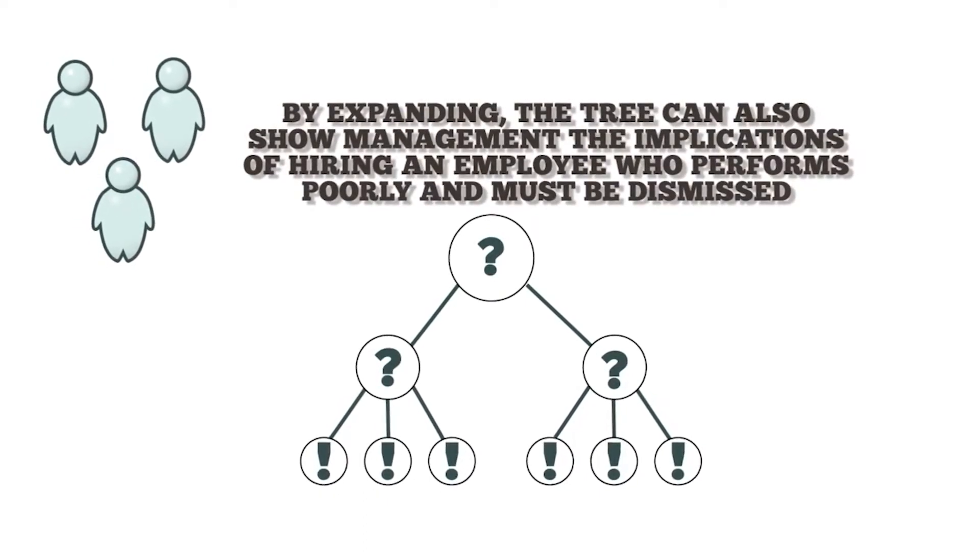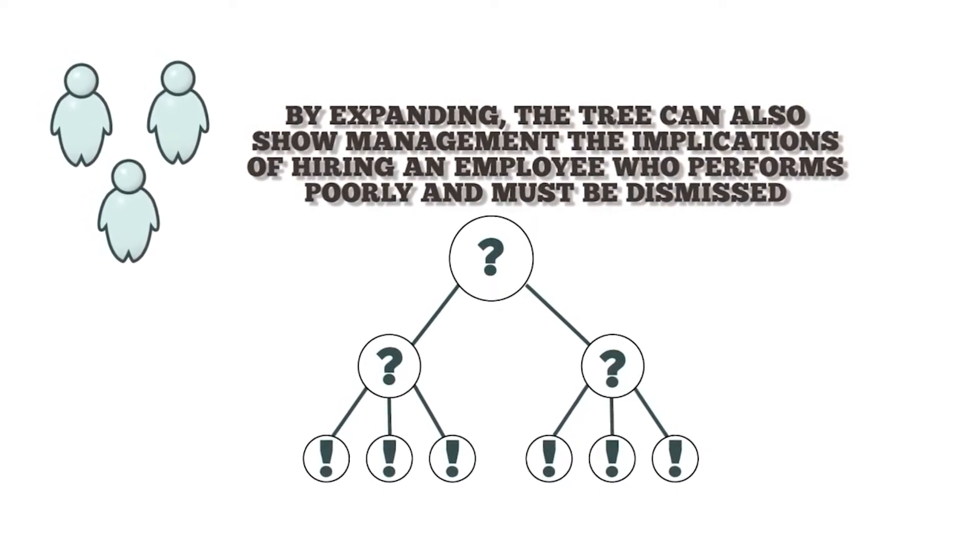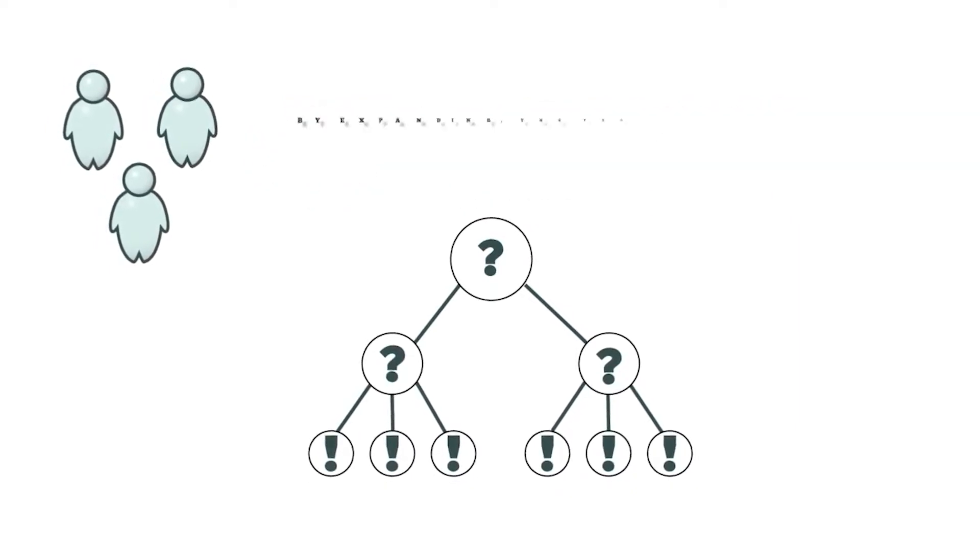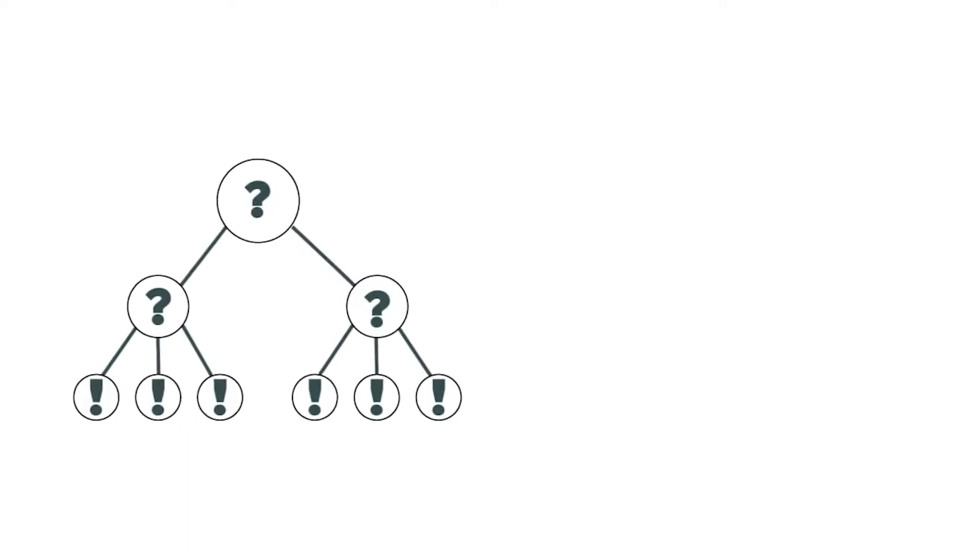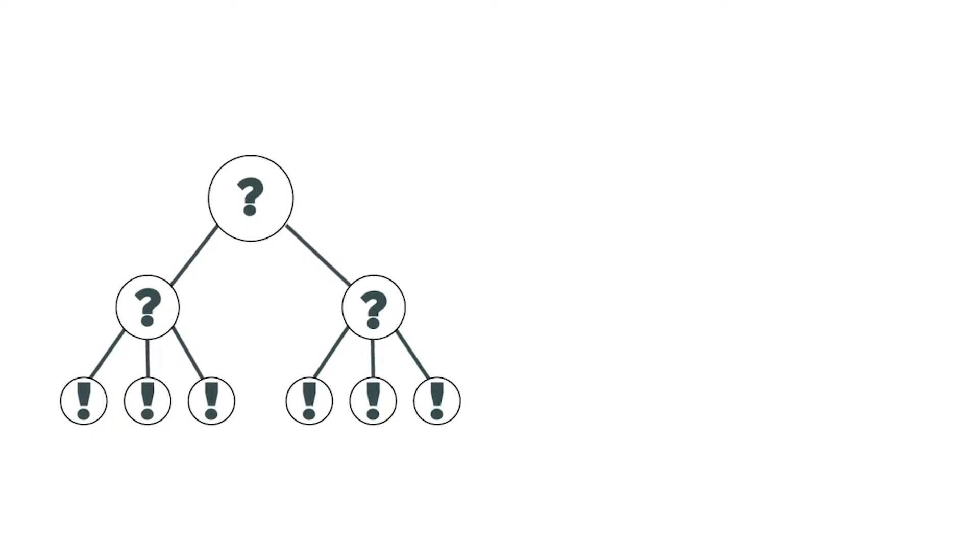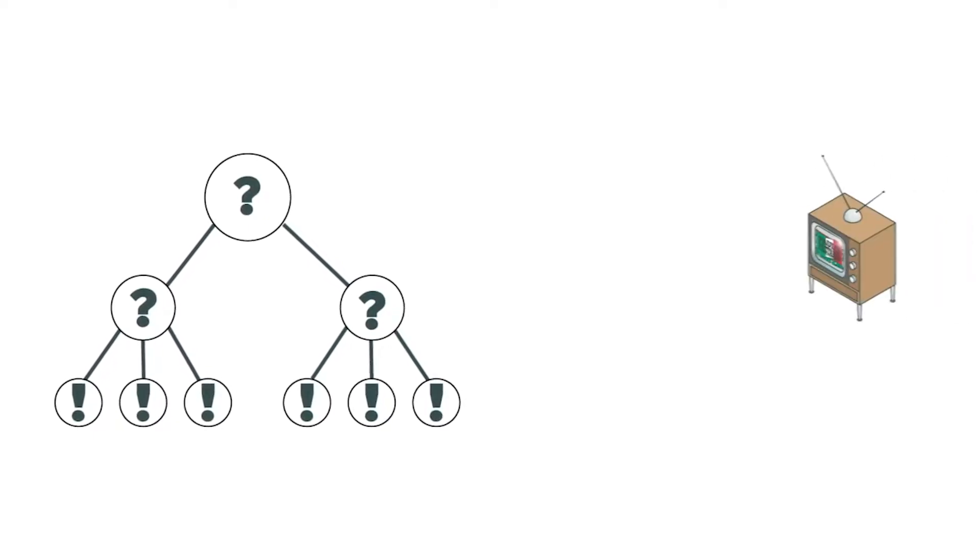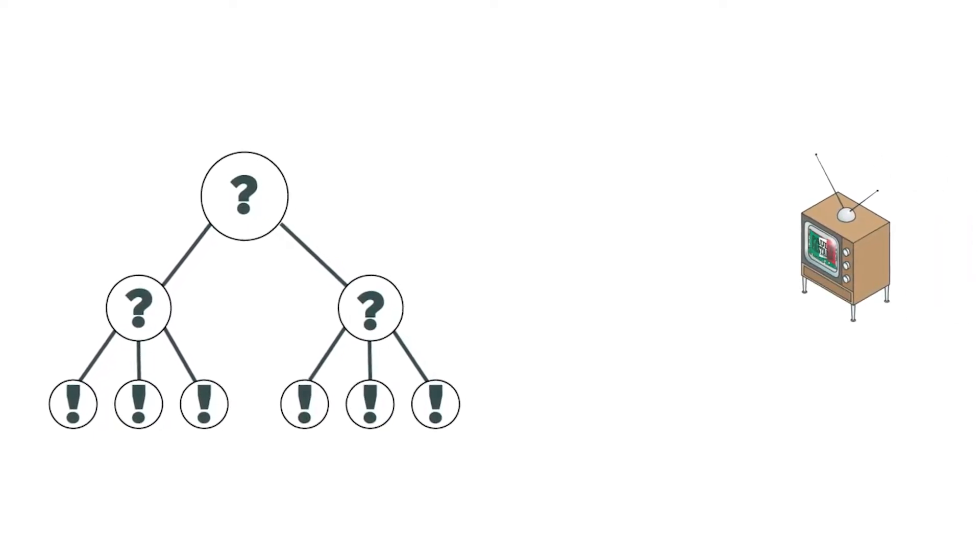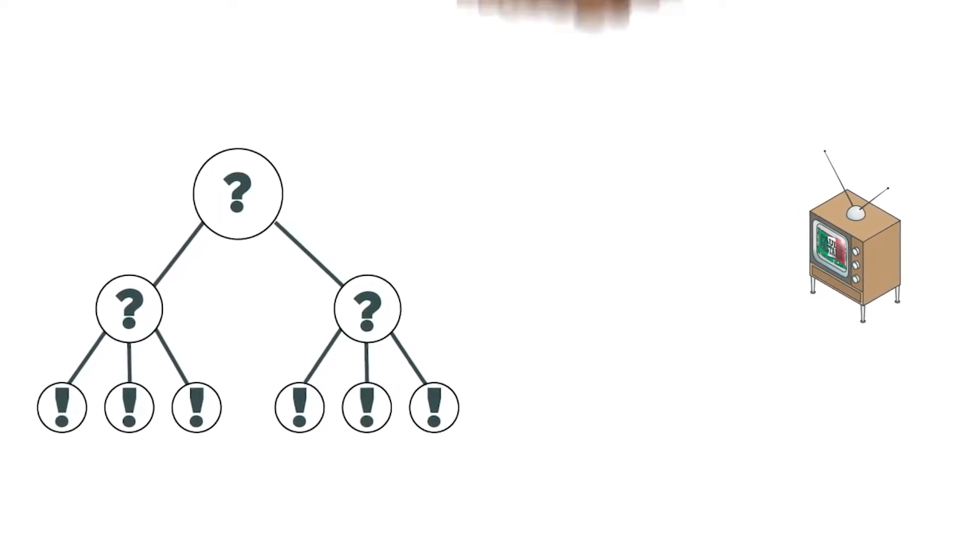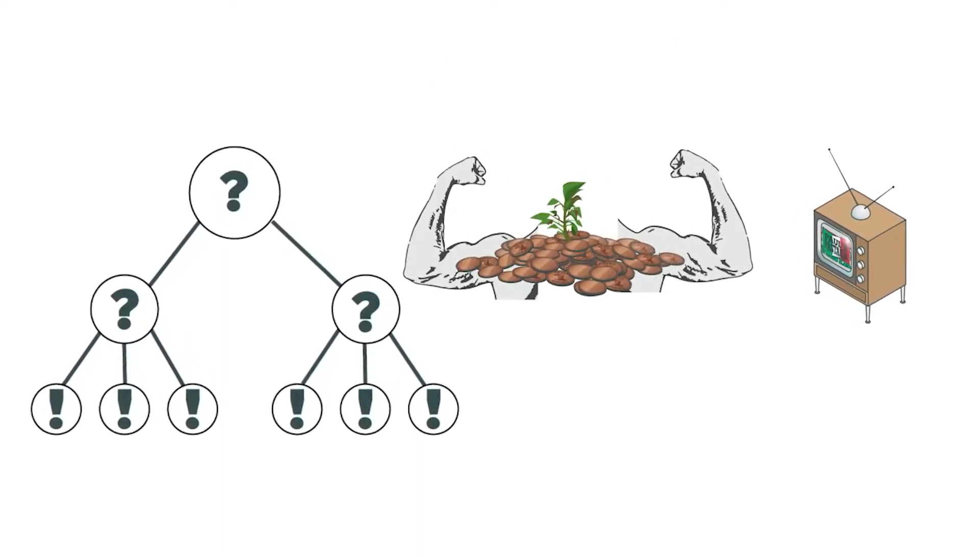By expanding, the tree can also show management the implications of hiring an employee who performs poorly and must be dismissed. Decision trees are also useful for exploring the impact of a decision. For example, a company considering whether to air a TV advertisement could set up the tree to explore what happens if it airs the ad, what happens if the economy is strong or weak, and so on.